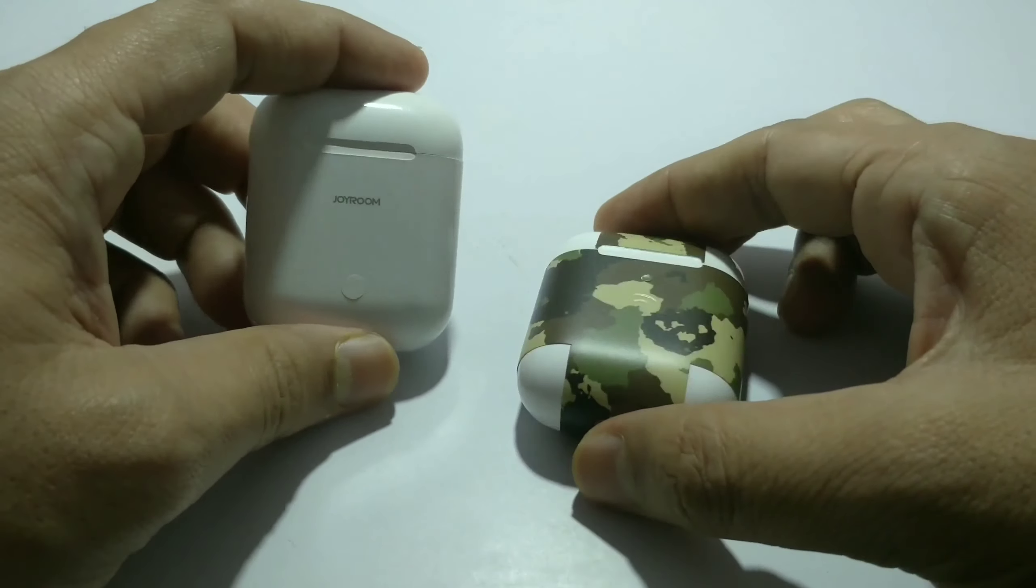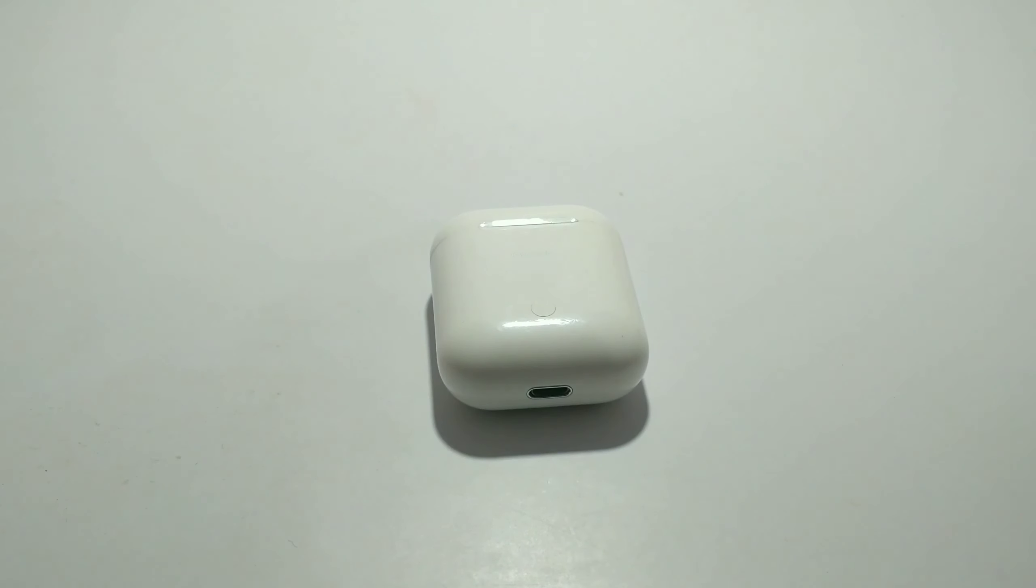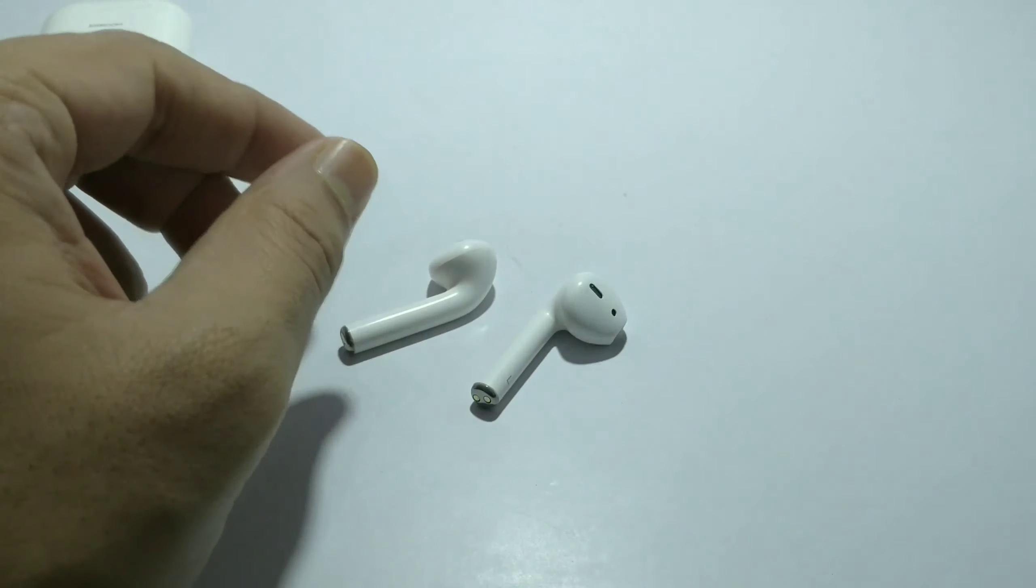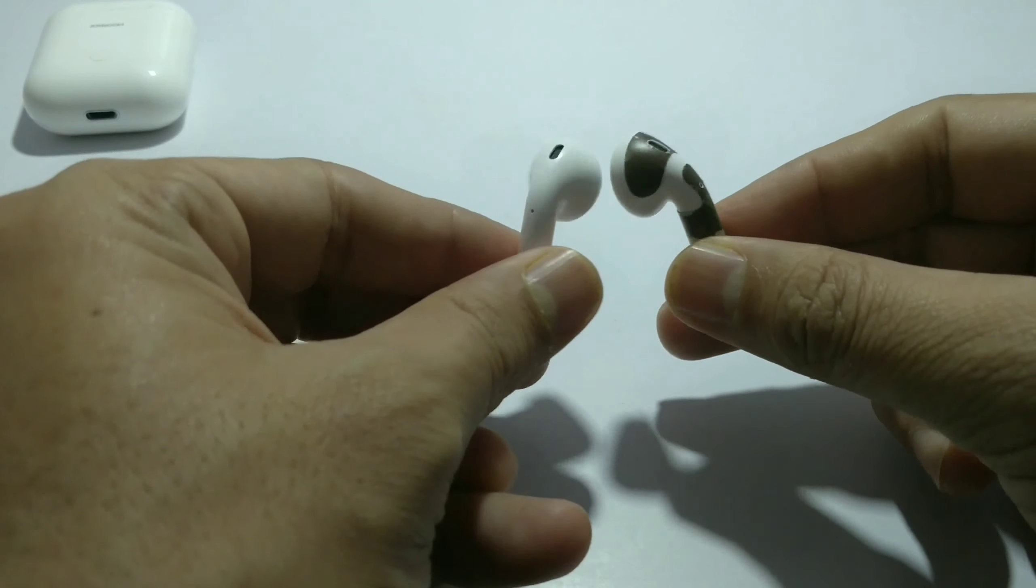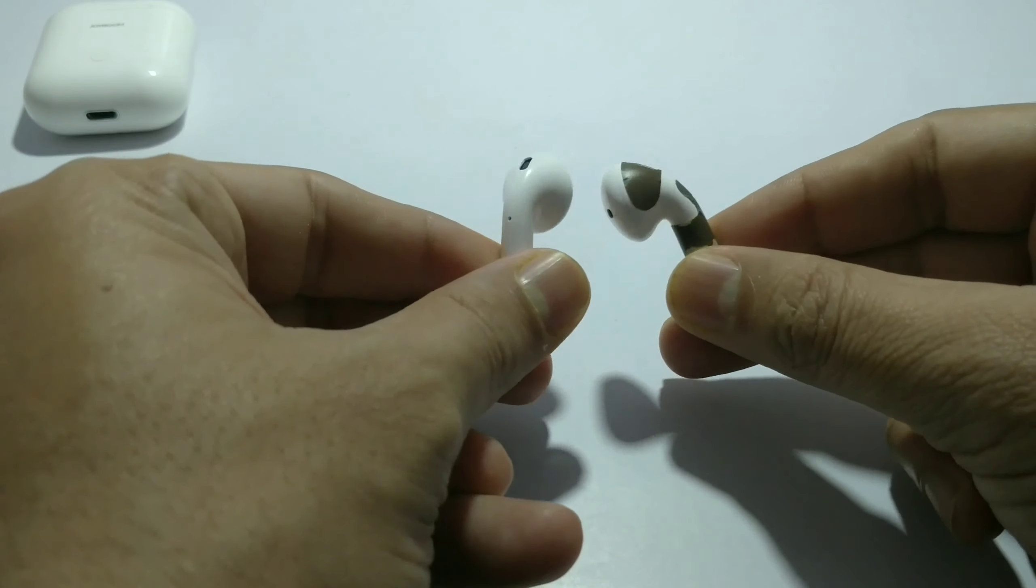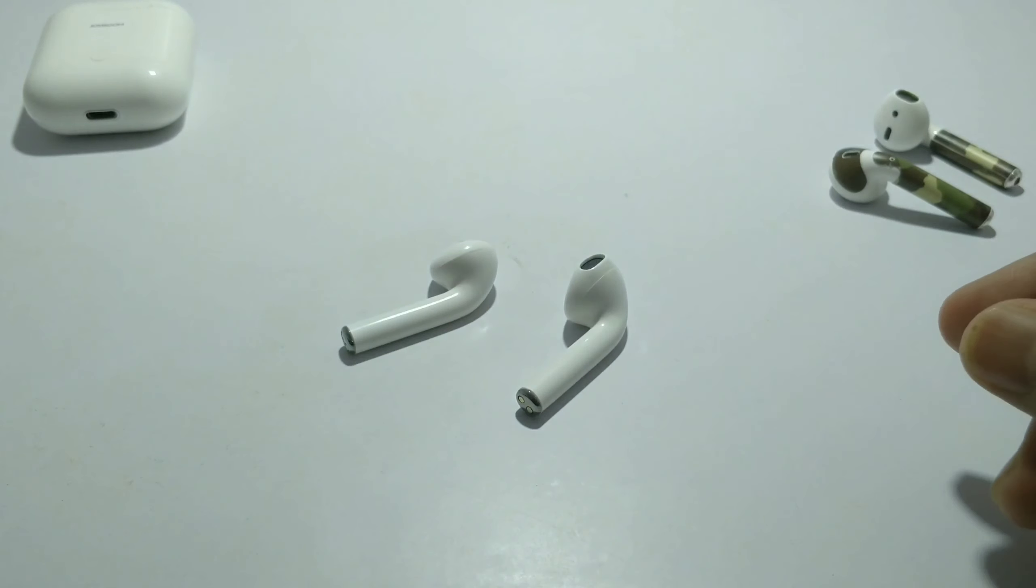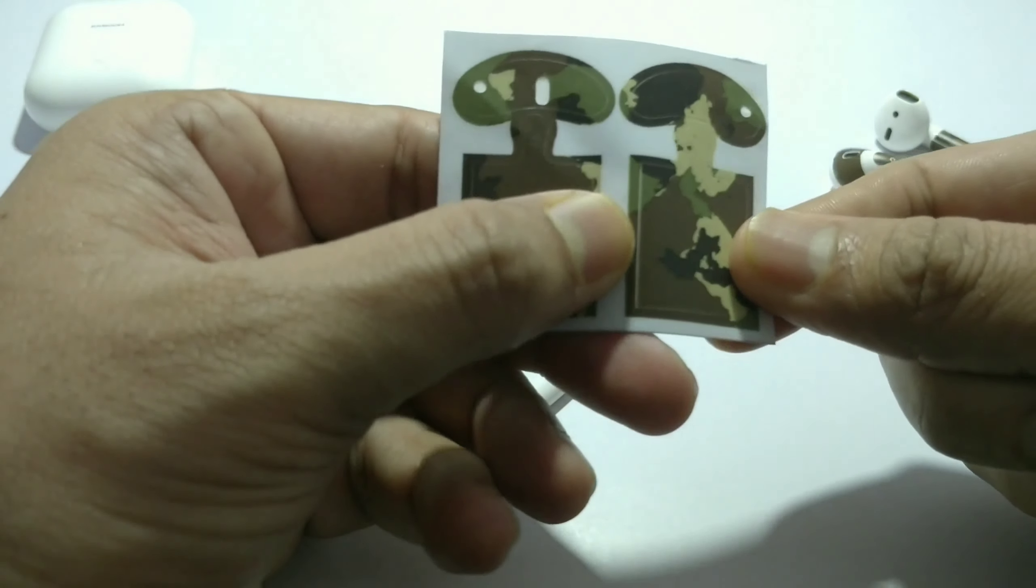I'm doing it here because I've already applied them on my AirPods, so I just want to demonstrate how to apply this. Let's start. First, let's take out the earbuds. Size and dimensions are the same. These stickers come with pre-cut measurements. You can see the cut is already here.